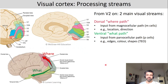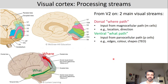From V1 to higher visual areas, more and more complex features are computed — first we have dots, then lines, then a certain length of lines, and in the end even circles and edges. Not only is there a distinction of complexity from V1 to V2, there is also a distinction of what aspects are computed where. From V2 on, there is a dorsal 'where' and a ventral 'what' pathway.